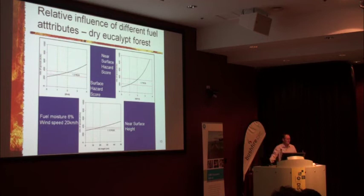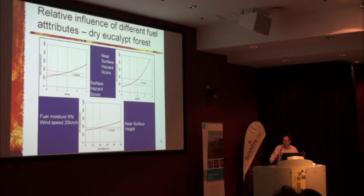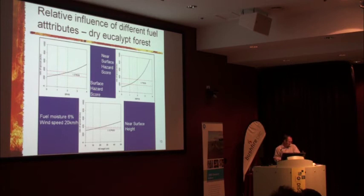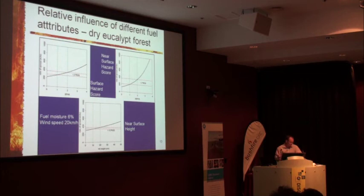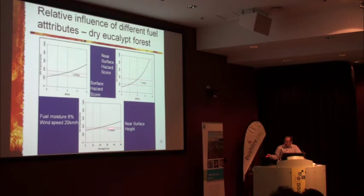The Project Vesta experiments took the concept of fuel hazard a step further and demonstrated that various measures of fuel hazard were strongly correlated with fire behaviour and could therefore be used as inputs to a fire behaviour model. Here — this is a slide from the FBAN course — we're looking at the effect of changes in surface fuel hazard, near-surface fuel hazard, and near-surface fuel height for fixed values of the other two variables. Essentially what that's saying is that the effect of near-surface fuel hazard is much larger than the effect of surface fuel hazard on rate of spread, and larger again than the effect of near-surface fuel height.